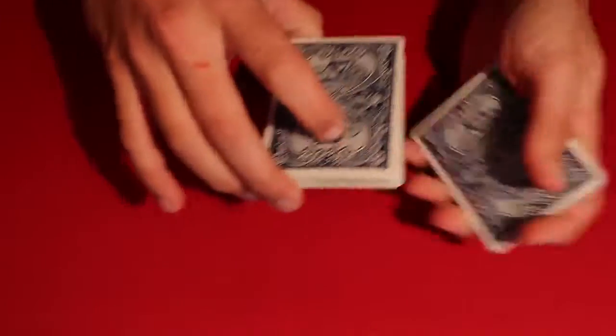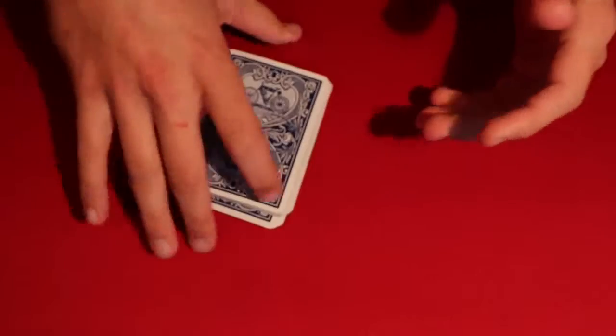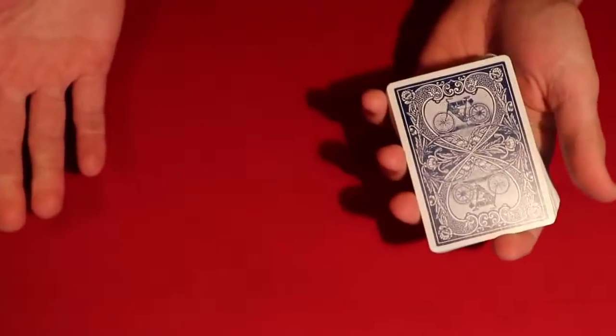Essentially, I would have the spectator tell me when to stop for another time. Let's say we go through the deck and they said stop right around here. Alright, so after all the shuffling you tell your spectator, okay I have no idea where your card is.